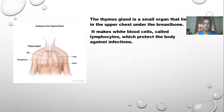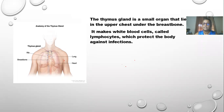The thymus gland is a small organ that lies in the upper chest under the breastbone. It makes white blood cells called lymphocytes which protect the body against infection. You hear about T-cells and CD4 cells — they come from the thymus gland. These white blood cells promote healthy cells and include natural killer cells which help fight infections — bacterial microbes, viruses, and so on.